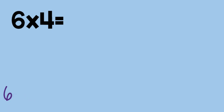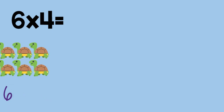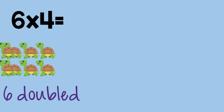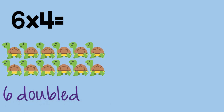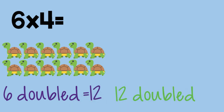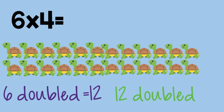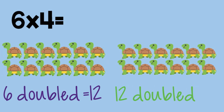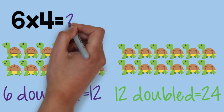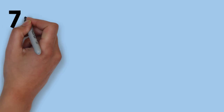Six times four. Six, doubled, is twelve. Twelve, doubled, is twenty-four. Six times four is twenty-four.